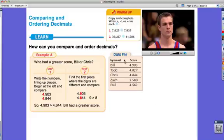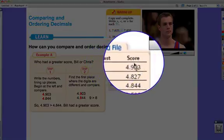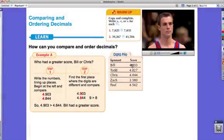In this data file we have two categories: the category of gymnast and the category of score. Now as you notice, on the gymnast side we have a total of five participants: Bill, Todd, Chris, Zach, and Paul, and over here we have their scores.